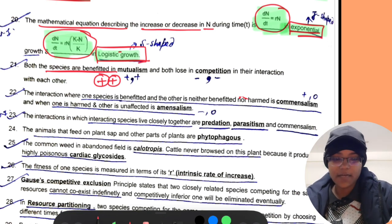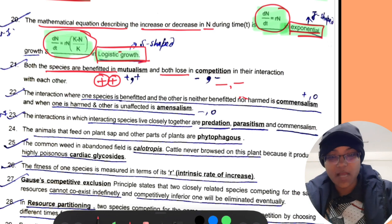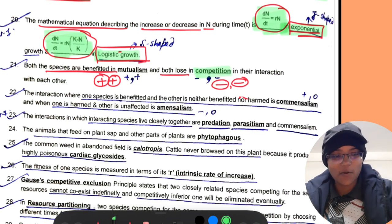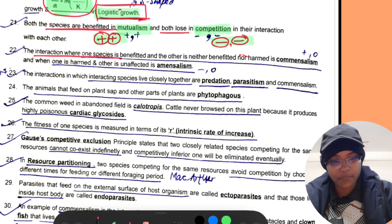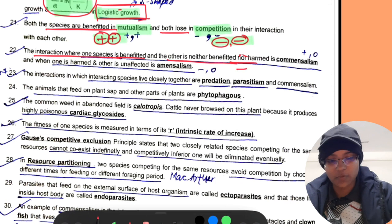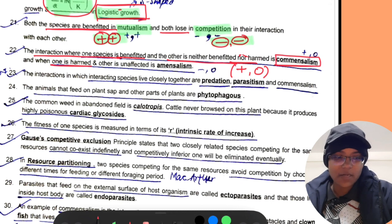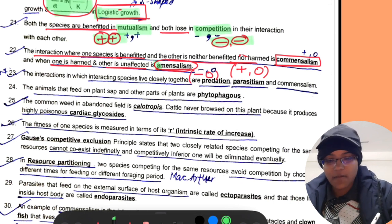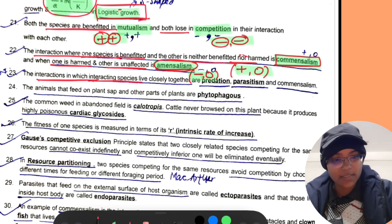Both the species are benefited in mutualism, and both lose in competition. The interactions where one species is benefited and the other is neither benefited nor harmed is called commensalism. When one is harmed and the other is unaffected, it is amensalism.